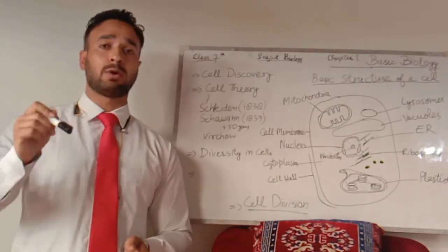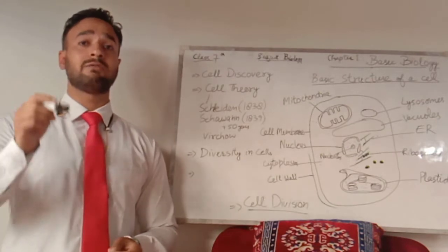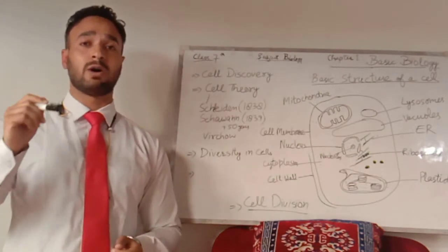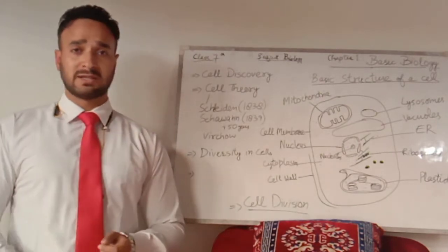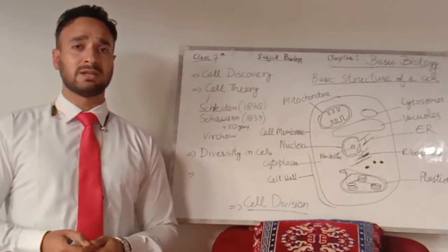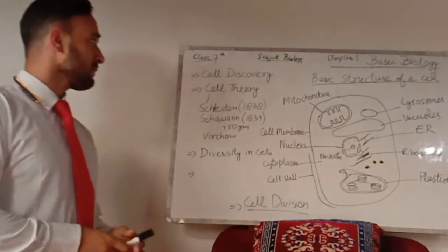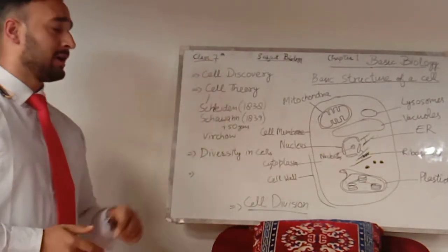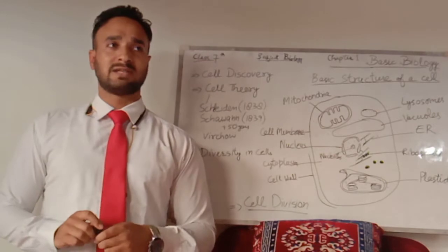What Robert Hooke found in the cork were actually dead cells — we will study in higher classes that the outer layer of the tree trunk, the cork cambium, is made up of dead cells. Though he named those compartments 'cell,' this is where the word cell came into existence. Robert Hooke was the first person to discover the cell. Now let's talk about the cell theory — the modern cell theory.